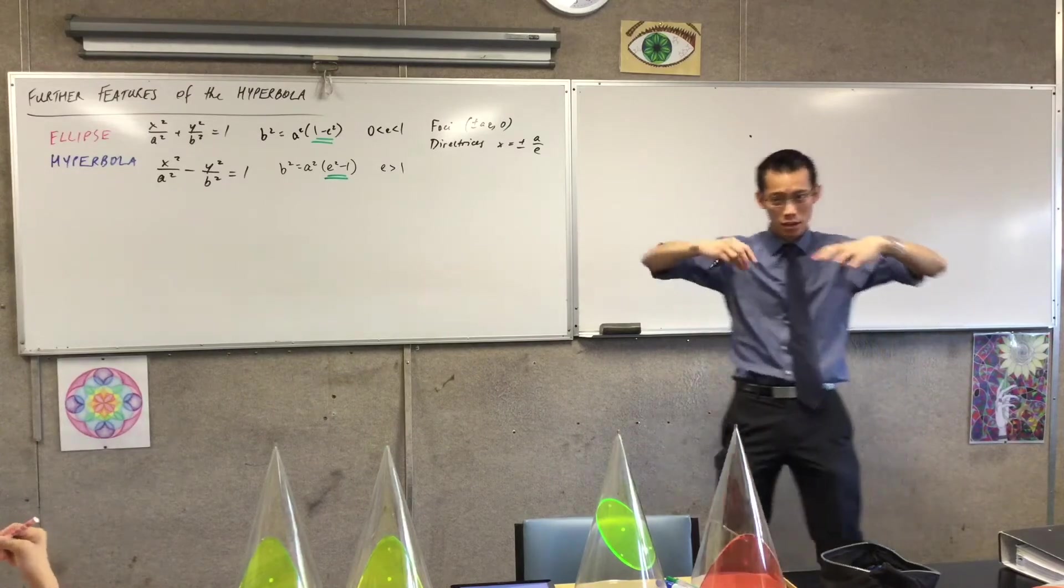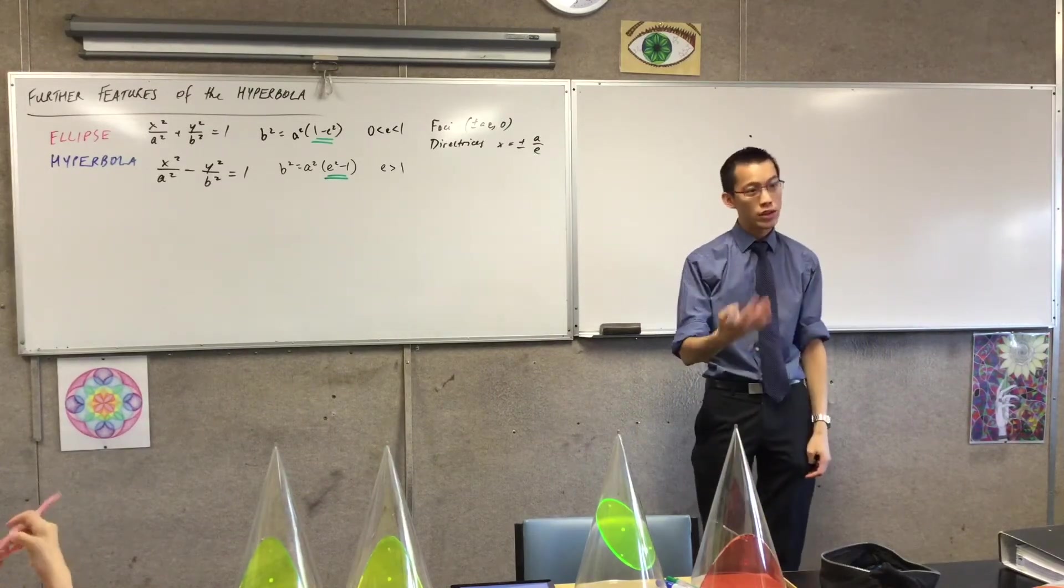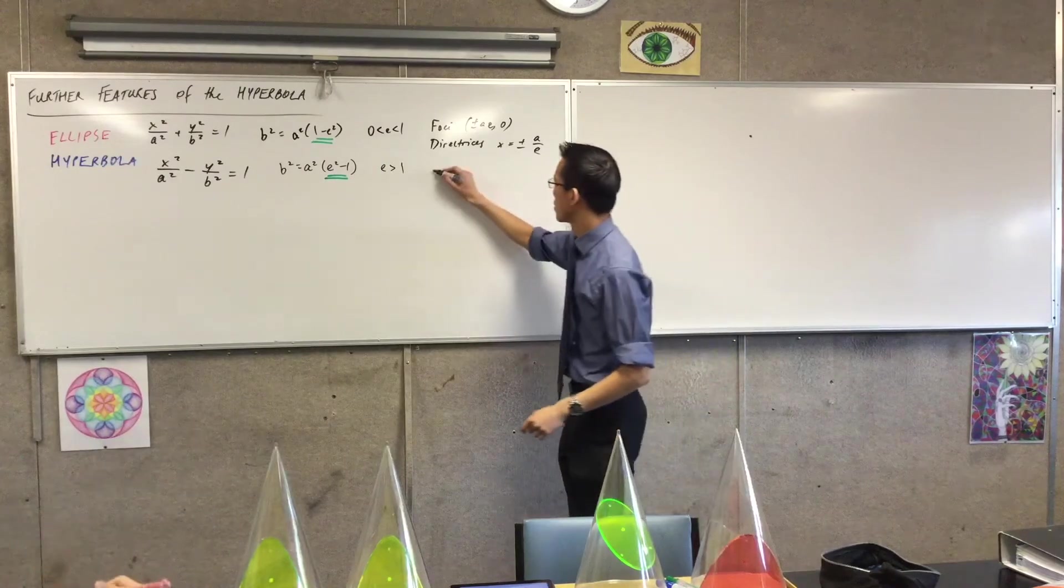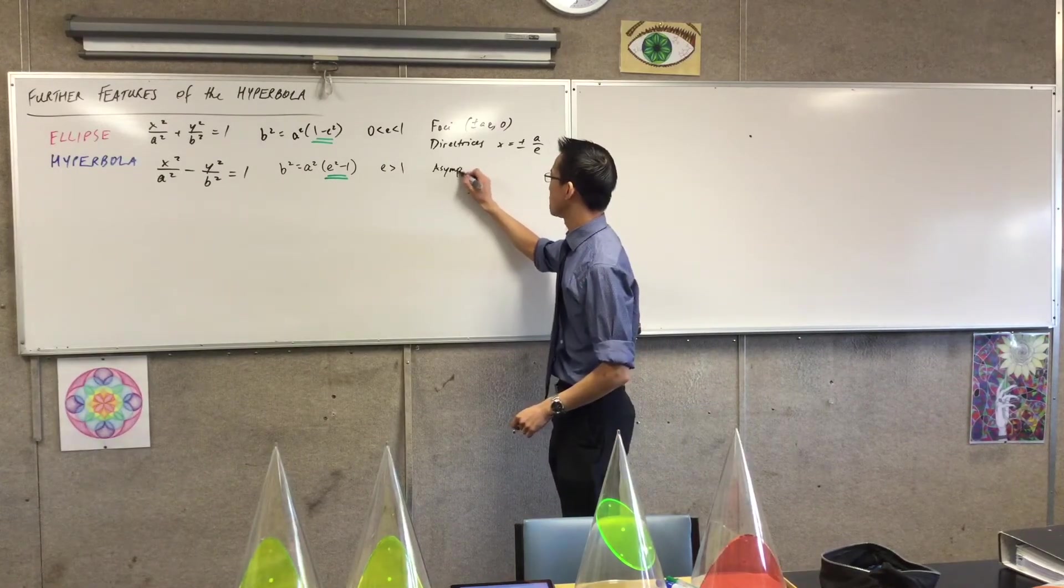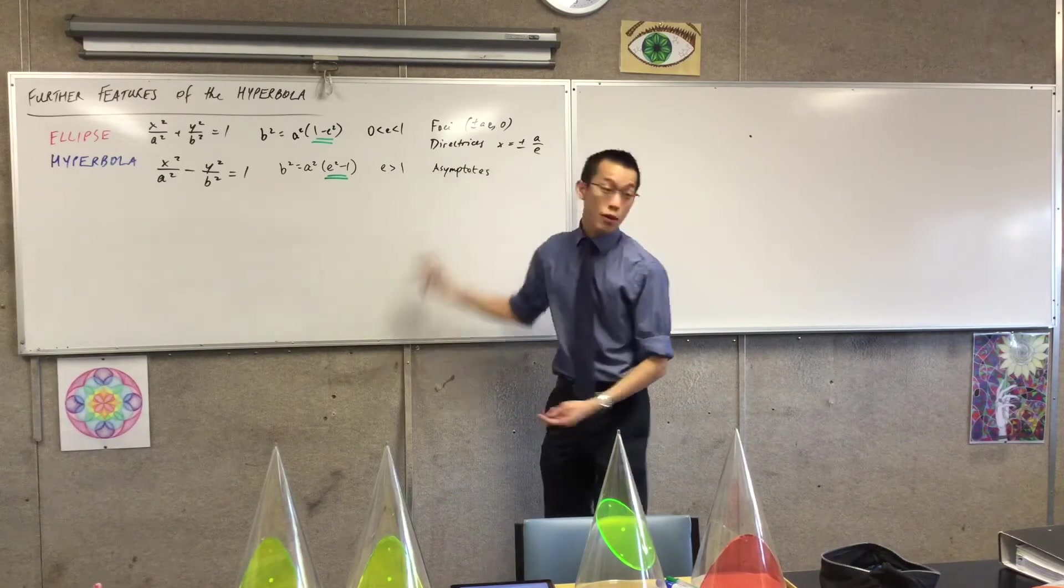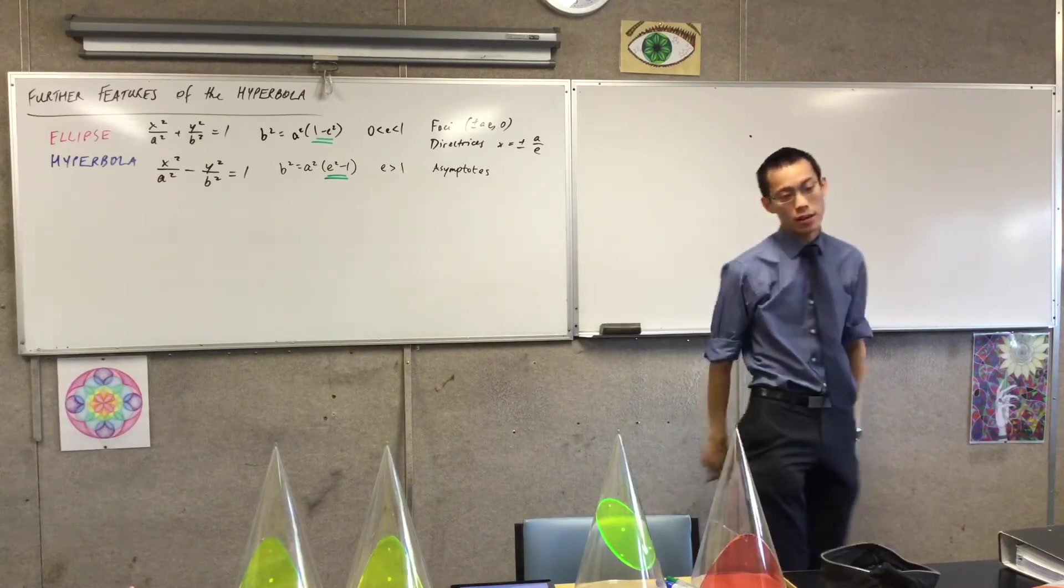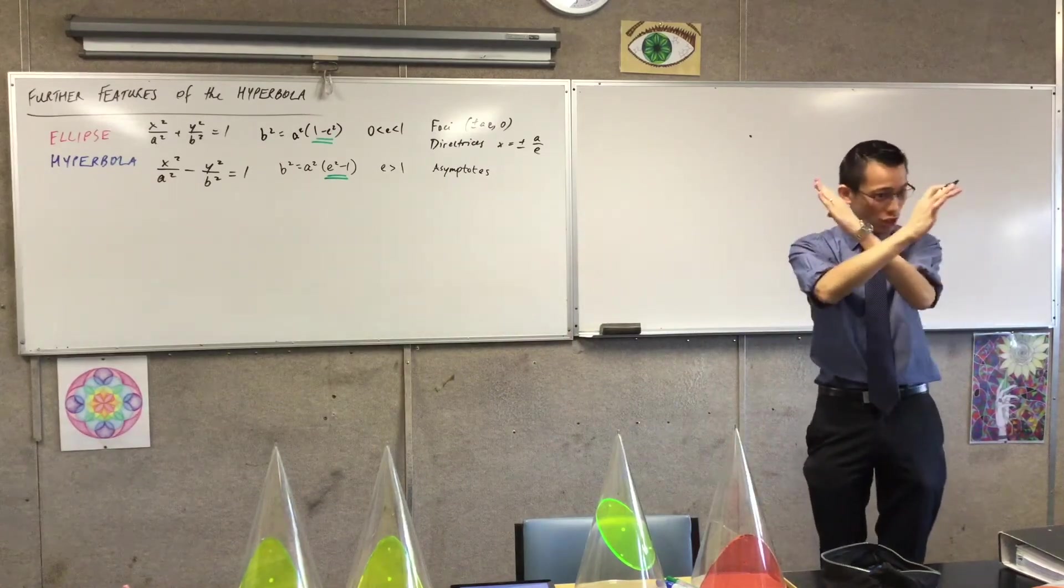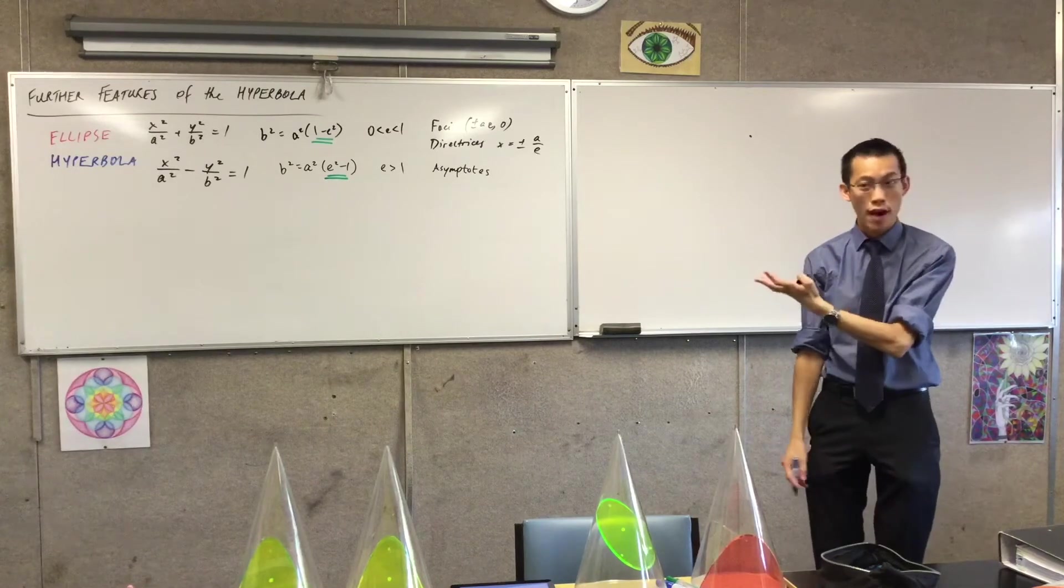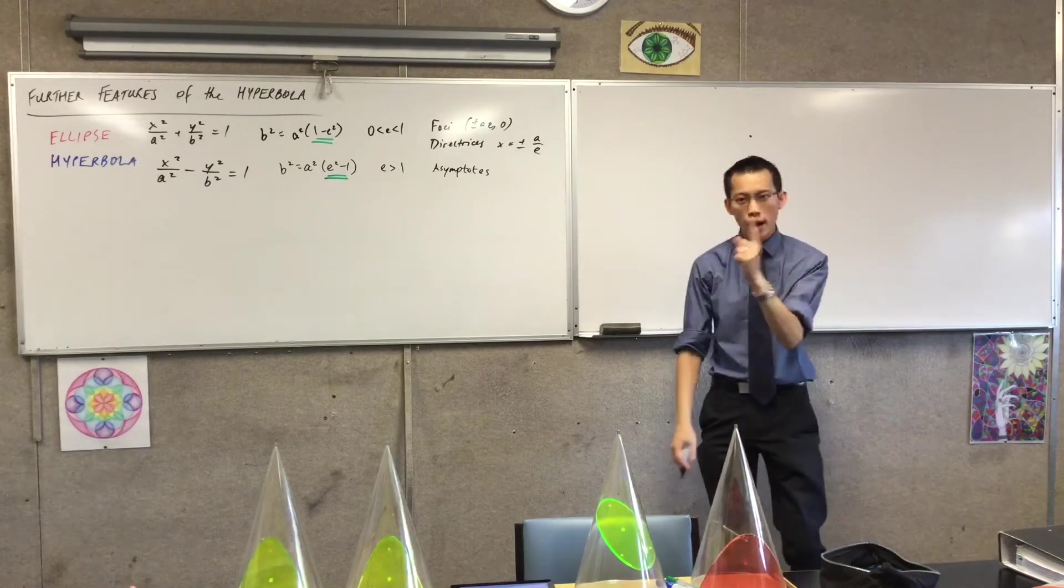But the hyperbola has more features than the ellipse because of the geometry of the shape, okay? For instance we noticed that there were asymptotes, asymptotes. And whenever you graph something with asymptotes it's important that you state what the asymptotes are and you show them, okay?